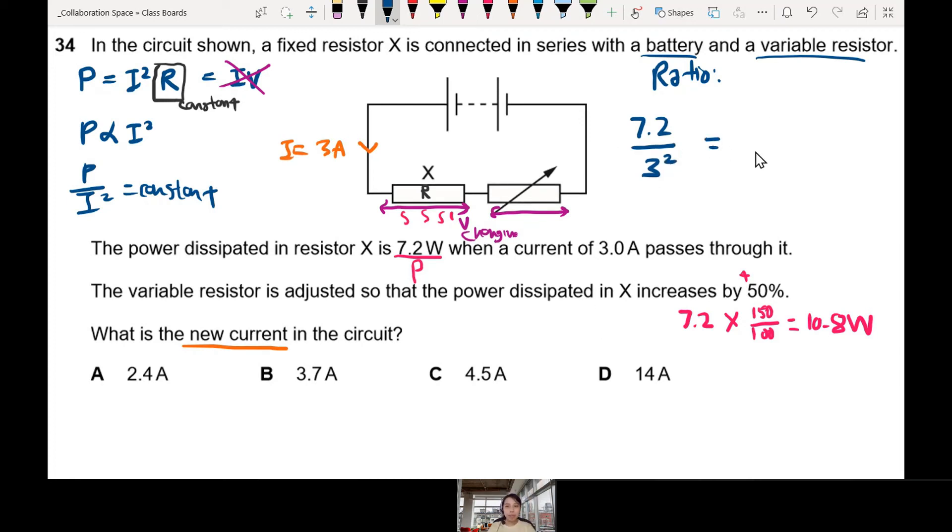After I change something, the power becomes 10.8. Then the current - I put I squared first. I know the ratio is the same because R is constant. So here you can find your I. Press calculator: 7.2 divided by 3 squared, then 10.8 divided by answer. Don't forget to square root. The answer is 3.67, approximately 4.